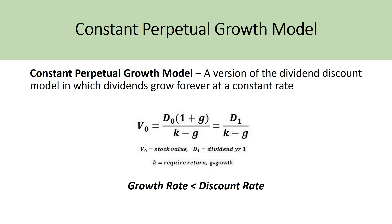An important rule: the growth rate G must be lower than the discount rate K. If G were higher than K, the dividend would be divided by a negative number, which would imply the company is valued negatively — which doesn't make sense. Additionally, if G equaled K, you'd be dividing by zero, making the value undefined.